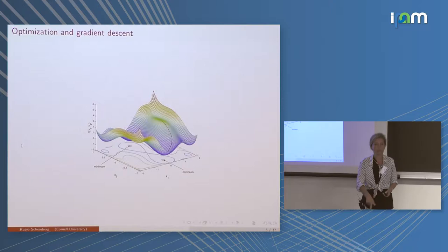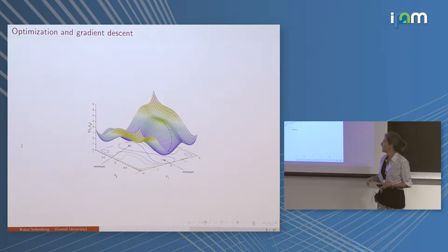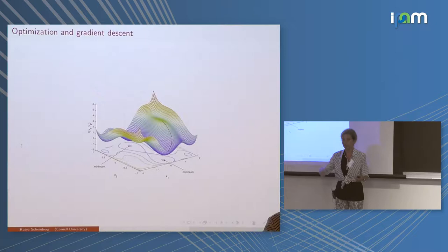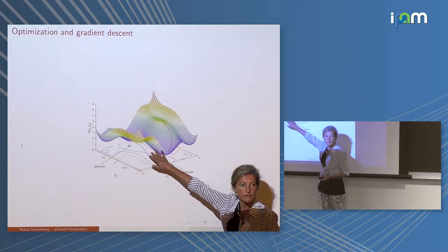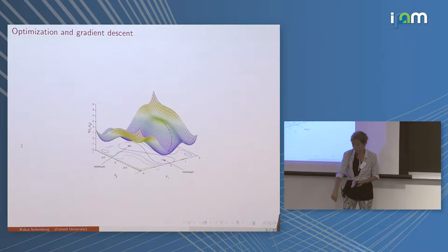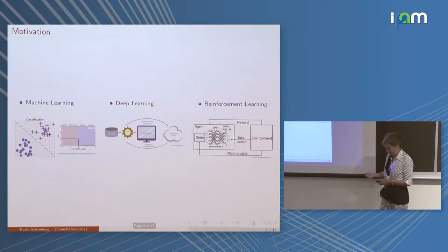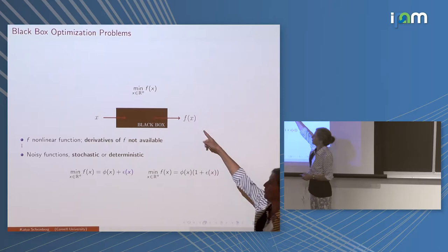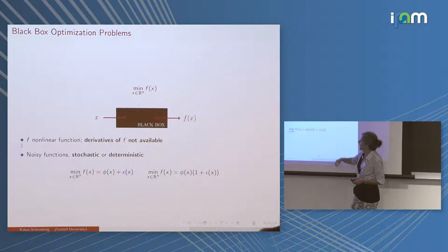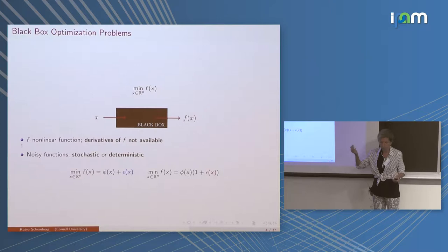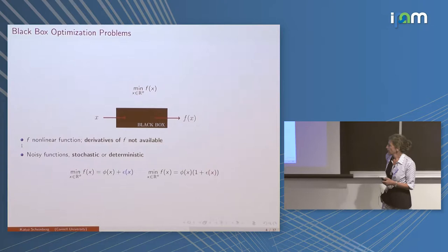In derivative-based optimization, you're standing on a slope — it's foggy but you can feel the ground around you, so you know how to go downhill: that's your gradient method. With derivative-free optimization, you instead have a lake. The lake has a bottom and you're trying to find the deepest point, but all you can do is drop measurements. You have no idea what the surface looks like, you can only take measurements, and those measurements are bound to be noisy.